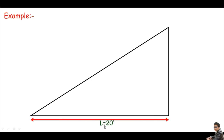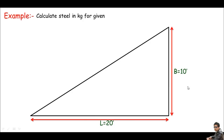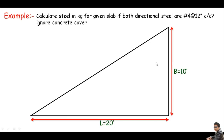In this example we are given a triangle that has a length equal to 20 feet and a breadth of 10 feet. We are asked to calculate the steel in kg. The slab details are already given, and we are informed to take steel in both directions with number four bars at 12 inch center to center. We can ignore concrete cover here.